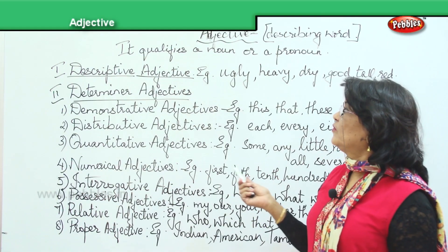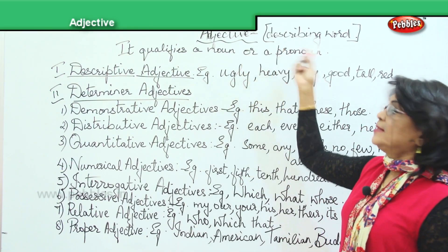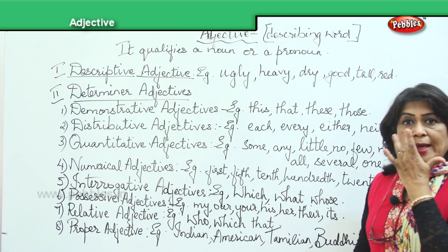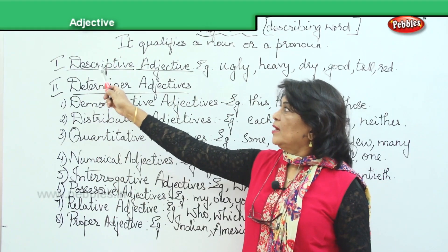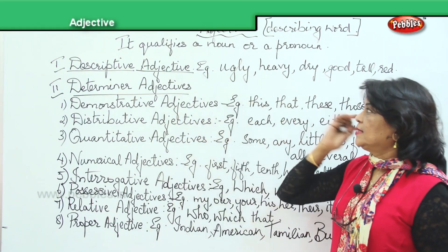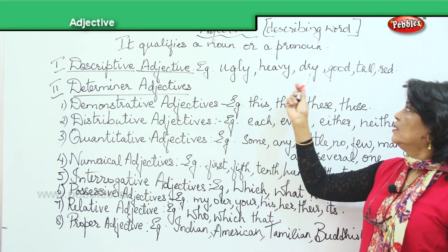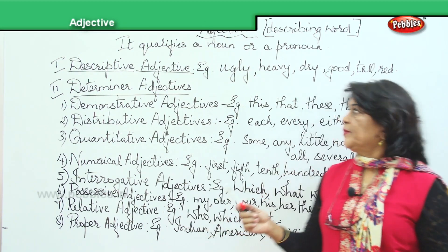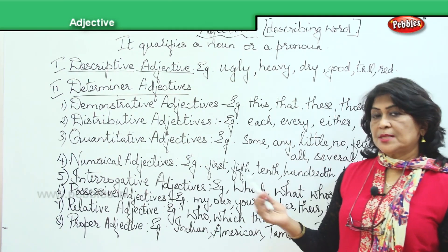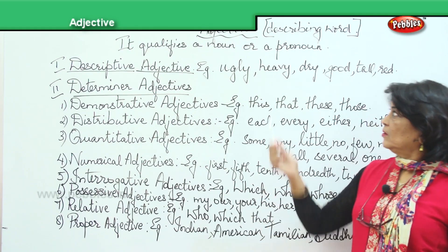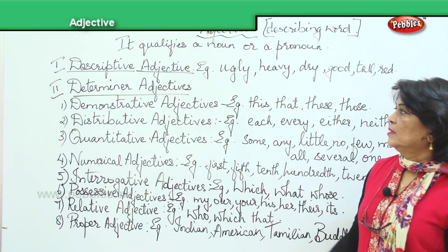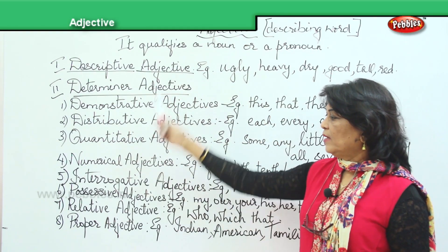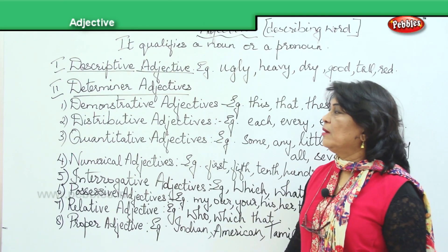Now I have given you the different types of adjectives. What is an adjective? It's a describing word and it qualifies a noun or a pronoun. The first kind is descriptive adjective — examples: ugly, heavy, dry, good, tall, red, beautiful, pretty, smart, colorful. The second is determiner adjectives, and I have given you eight different kinds under this.